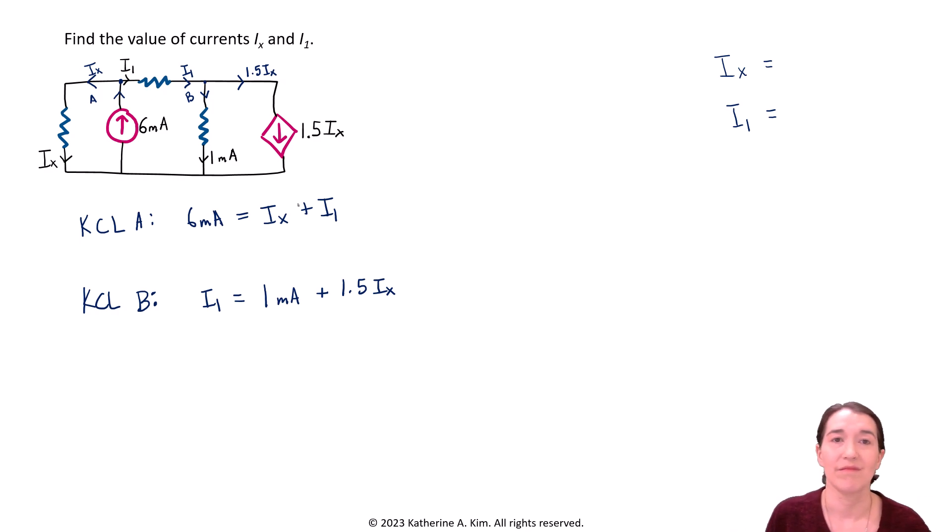And let's solve it. So we notice right away that I1 is already written over here. So we can just substitute that in here. And let's rewrite that so they have one equation in terms of Ix. So now I guess this one will become 6 milliamps equals Ix. And then plus, we're going to move this into there. So it's 1 milliamp, plus 1.5 Ix. Now we're just solving for Ix.